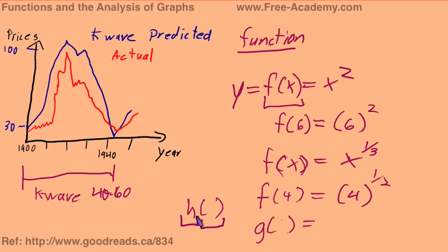And again, in order to be a function, you have to have exactly one output for every input. So going to our graph here, in the year 1910, we had exactly one point on the k-wave. In 1920, there is exactly one point on the k-wave. And this is something we're going to introduce as the vertical line test of functions.